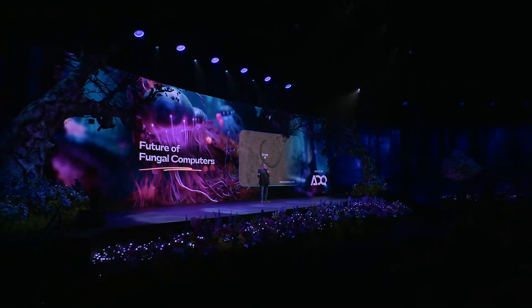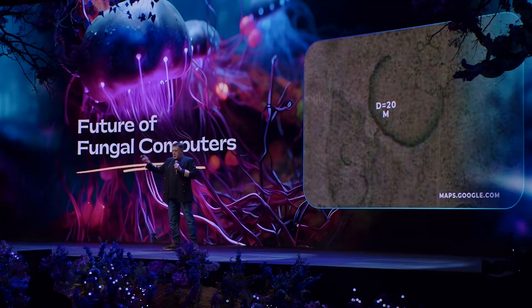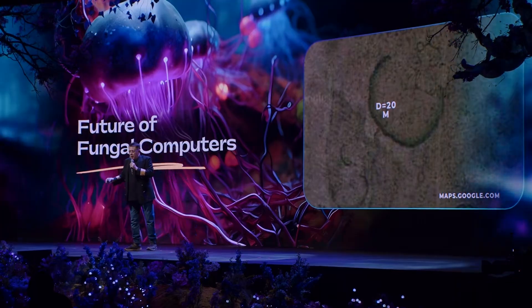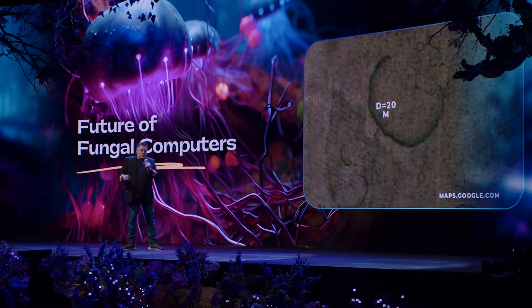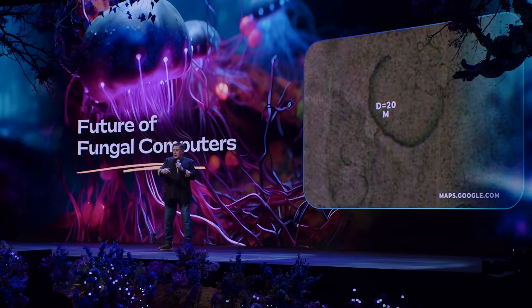The question could be: what are mushrooms talking about? First of all, they're talking about food. If there is some food — for example, a rotting tree — mushrooms will be telling other mushrooms, basically other parts of the mycelium, to grow there. If there is a dry area of soil, mushrooms will signal to escape.